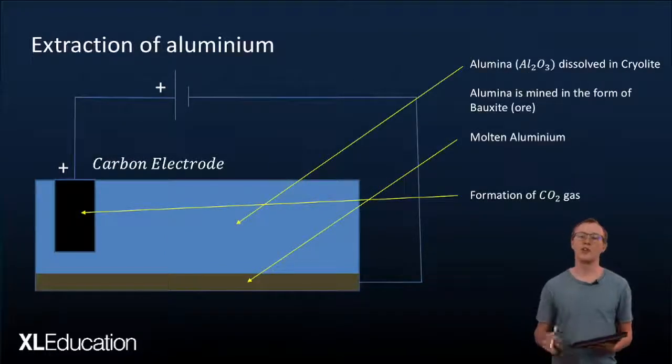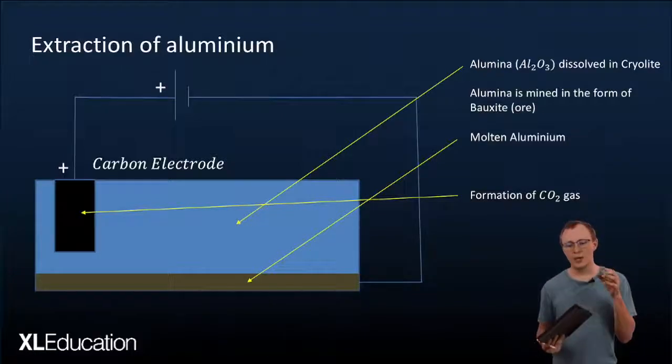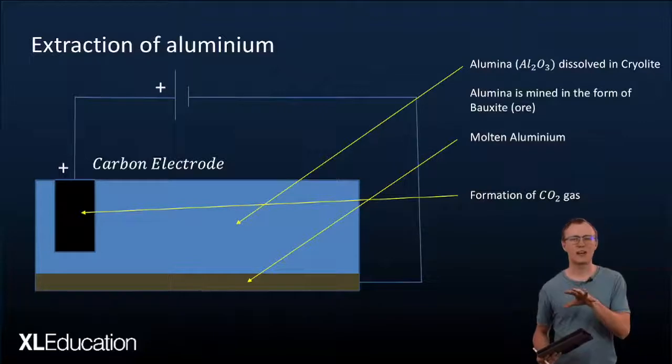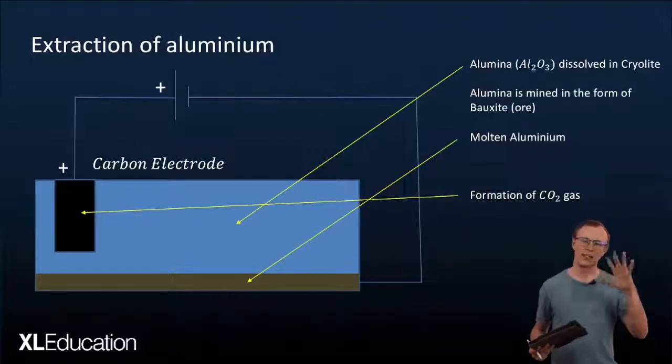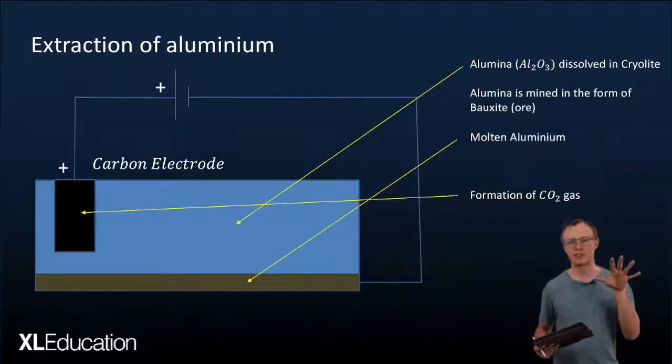Then we can move on to the extraction of aluminium. So when we mine aluminium we get a thing called bauxite, which is aluminium ore which means you have aluminium oxide that has rocks and all sorts of other stuff still stuck in there.